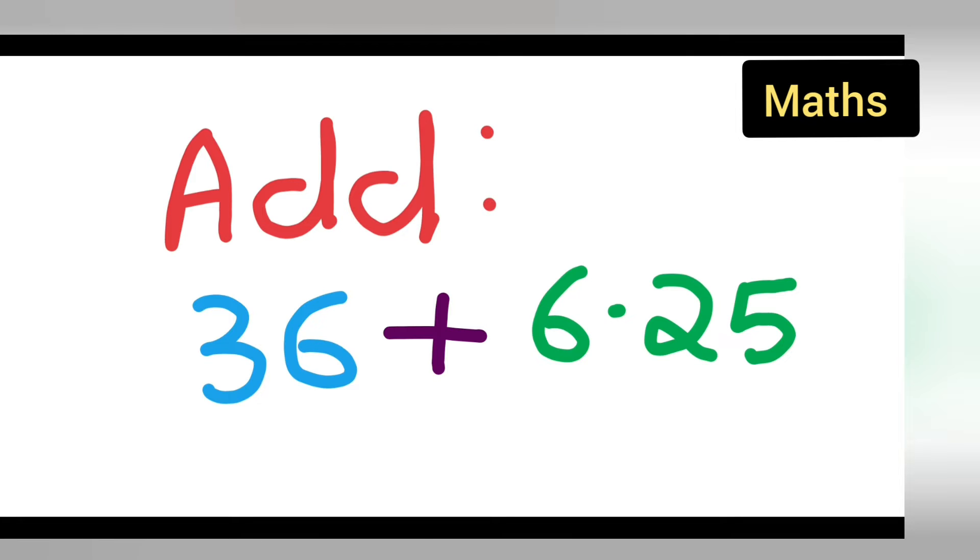Welcome to today's class of mathematics. Today's question is add 36 plus 6.25. Here one number is with a decimal point and one is without a decimal point, and you have to add these numbers.